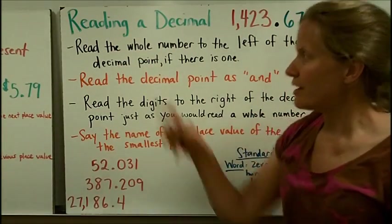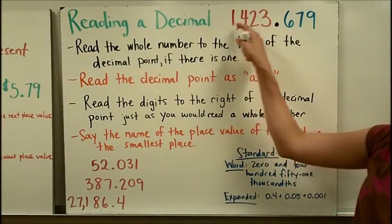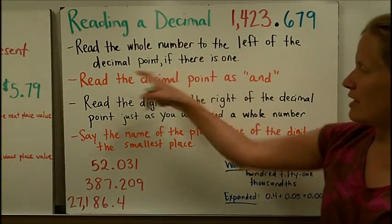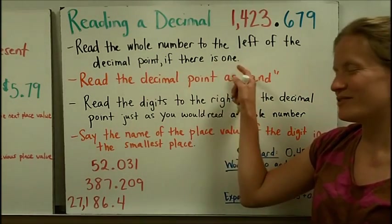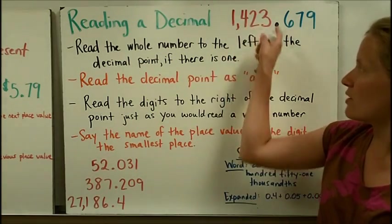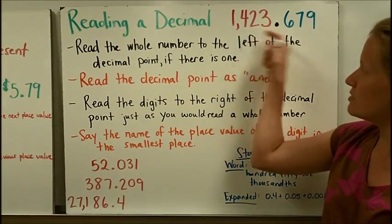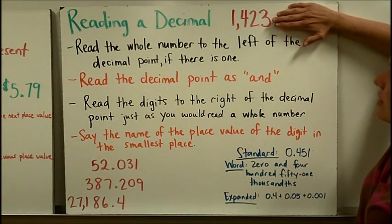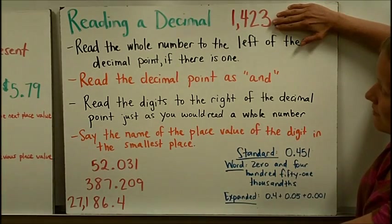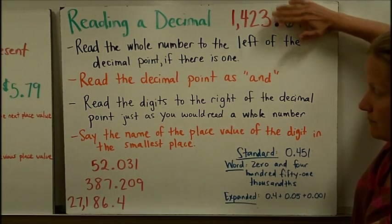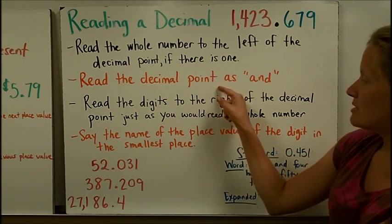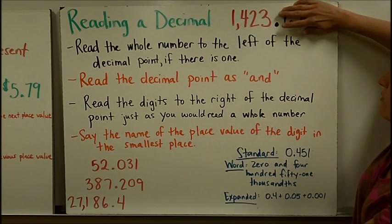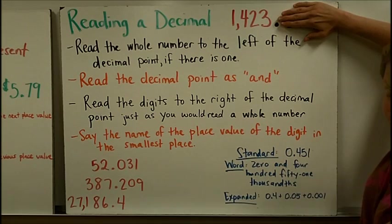So here are the directions for reading a decimal, and we're going to use this number here to practice on. Read the whole number to the left of the decimal point, if there is one. It says, if there is one, because sometimes there will be a zero in the ones place. But we have a whole number to the left of the decimal, so we're going to read it just like normal. So you're going to cover up your decimal and your decimal point, and that number is one thousand four hundred twenty-three. Now, I'm going to read the decimal point as and. So when I get to the decimal, I say and. So, so far, one thousand four hundred twenty-three and.